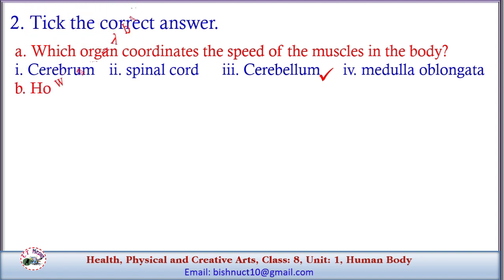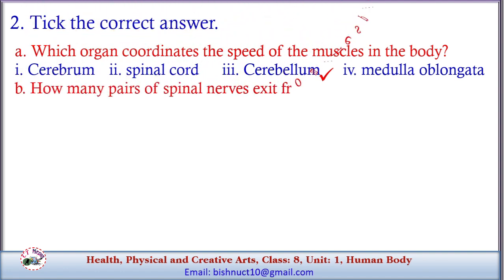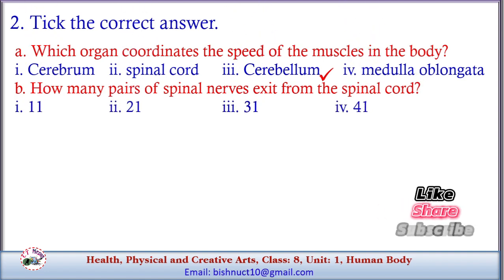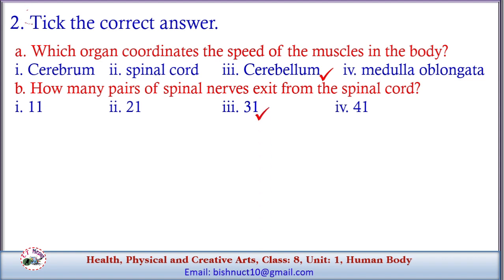B. How many pairs of spinal nerves exit from the spinal cord? Options: 1. 11, 2. 21, 3. 31, 4. 41. Answer: 3 — 31 pairs.